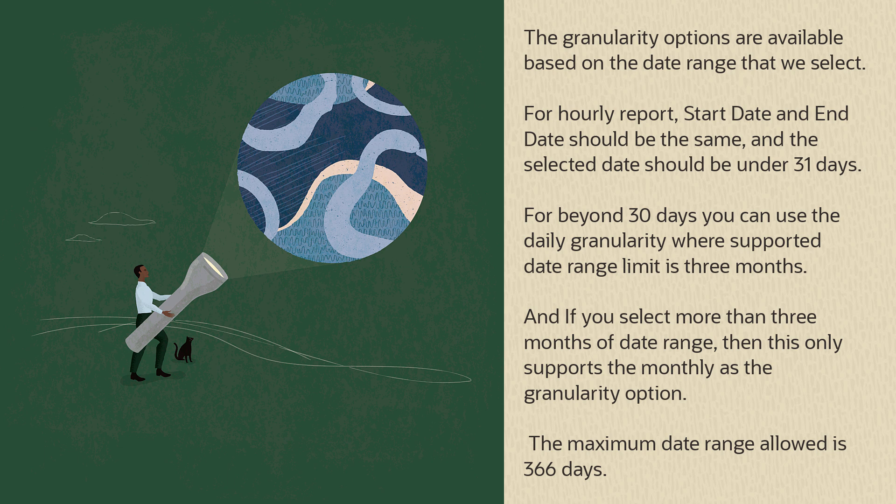For beyond 30 days, you can use the daily granularity, where the supported date range limit is three months. And if you select more than three months of date range, then this only supports monthly as the granularity option. The maximum date range allowed is 366 days.